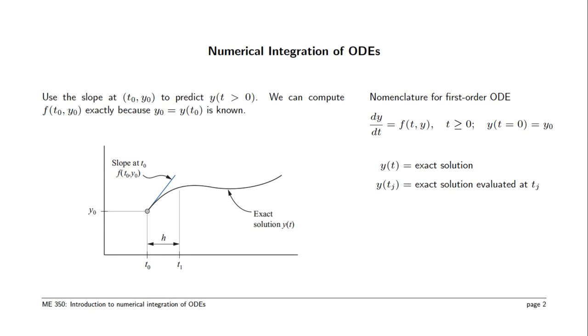We're going to use discrete steps of size h. h is called the step size, or sometimes the time step. Notice the nomenclature on the right. Y(t) is the exact solution. Y(t_j) is the exact solution evaluated at one of the discrete t_j values. Here we show j equal to 1.